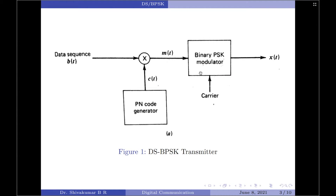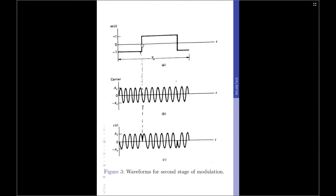In the second stage, we are going to perform binary PSK modulation on the product signal m(t) by using a carrier. Here, we have taken a very small portion of the product signal m(t) for illustration, and for the carrier we are considering a sinusoidal signal. As per binary PSK modulation, whenever we have to transmit symbol 1, the carrier is transmitted as it is without any change in phase. On the other hand, when symbol 0 has to be transmitted, the carrier is phase advanced by 180 degrees or by pi radians. So this portion representing symbol 0 is transmitted by phase advancing the carrier by 180 degrees.